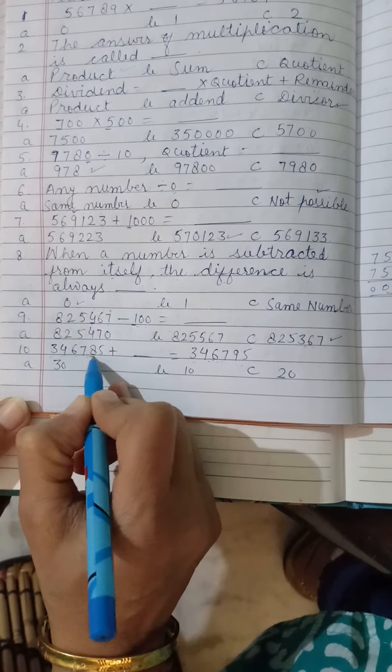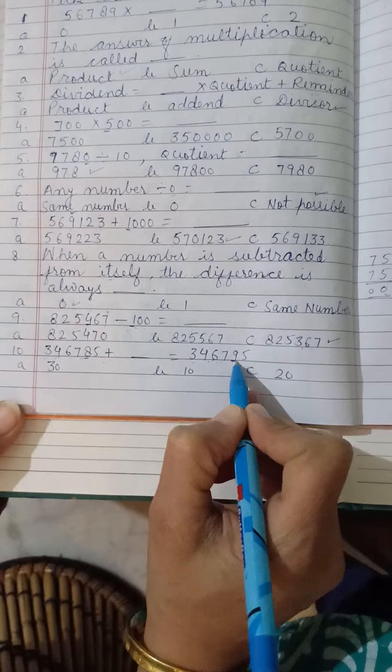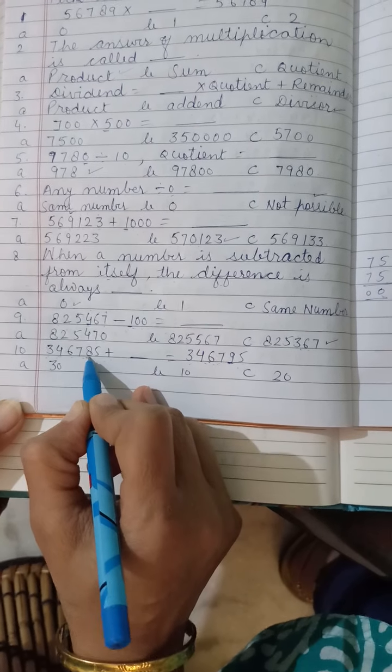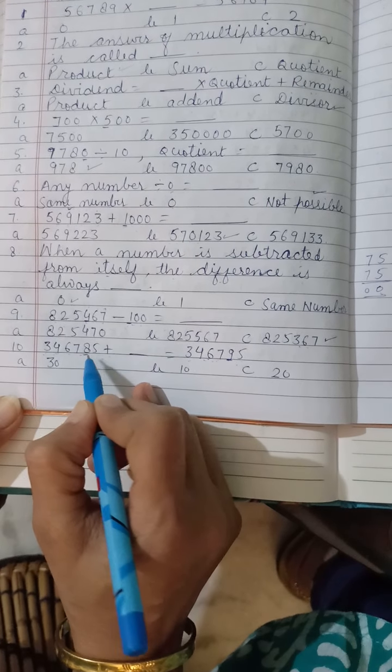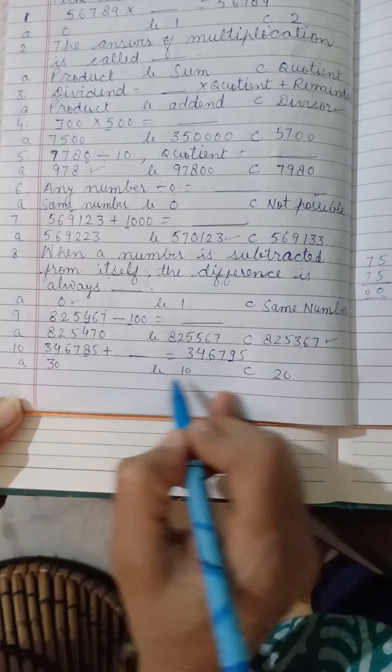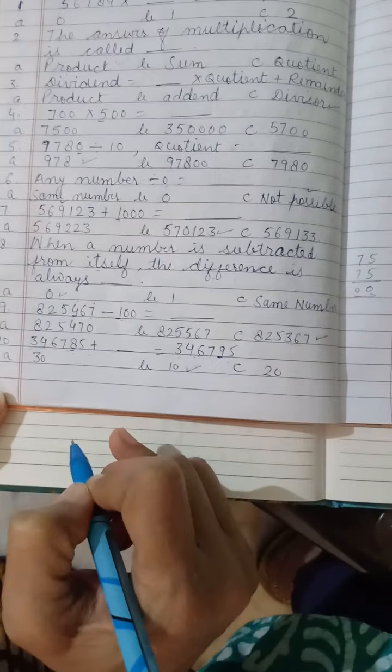These are same to same. And this is 8. And this is 9. Means 10 place digit is increased by 1. Means plus 10 is there. Then this is the correct answer for it.